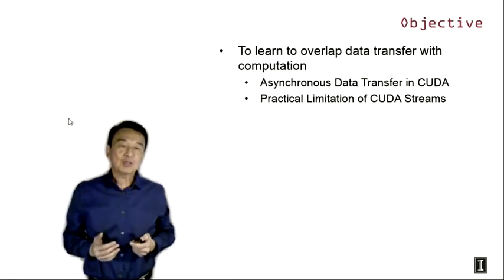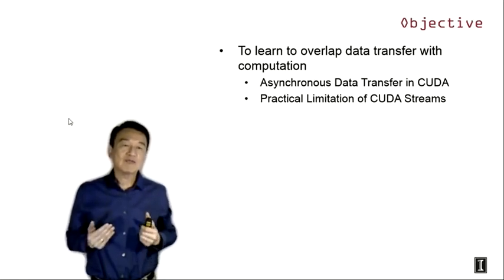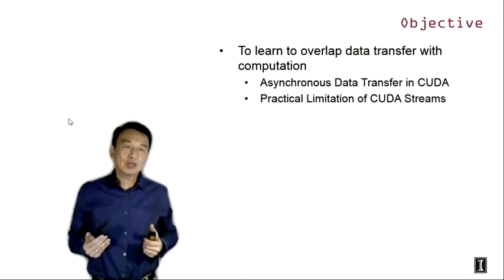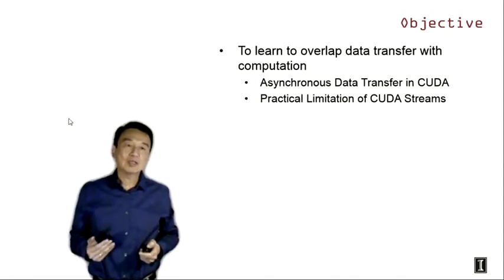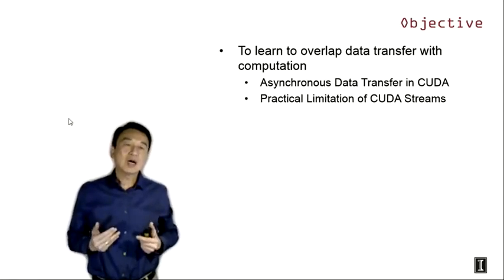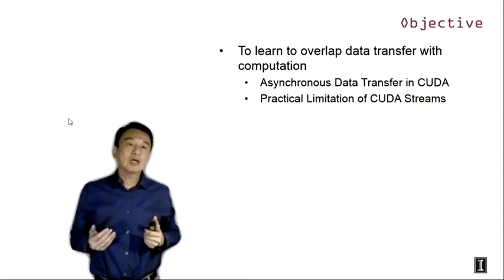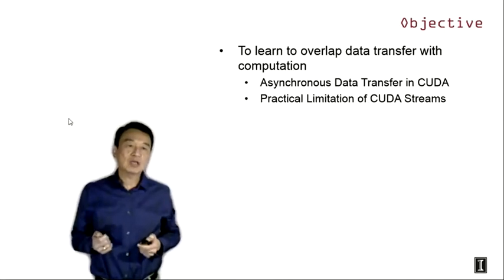The objective of this lecture is for you to learn to overlap data transfer with computation. Overlapping data communication or transfer with computation is a fundamental problem for large-scale parallel computing, and you will have exactly the same kind of problem with other programming systems such as MPI. Today we're going to focus on how we can handle such latency overlapping in the CUDA environment using asynchronous data transfer, and also discuss some practical limitations of CUDA streams.